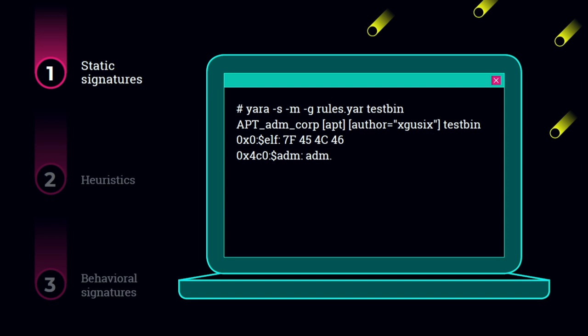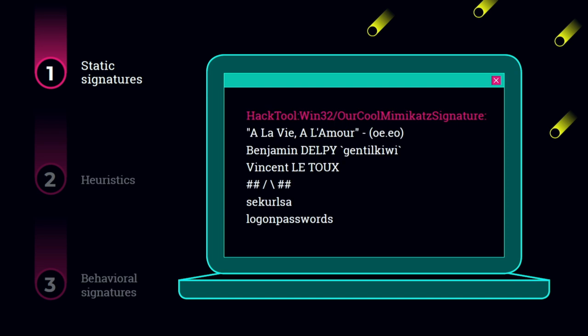Now let's create a static signature that captures Mimikatz — we love Mimikatz and use it as a demonstration across this talk. I extracted six strings from the Mimikatz binary. Can we create a YARA rule based on those six strings only? The answer is no — because even this presentation PDF file actually contains those strings, and it is not Mimikatz. We cannot simply verdict a file based on some strings. We have to be very careful when creating static signatures, because false positives are one of the worst nightmares of security researchers.